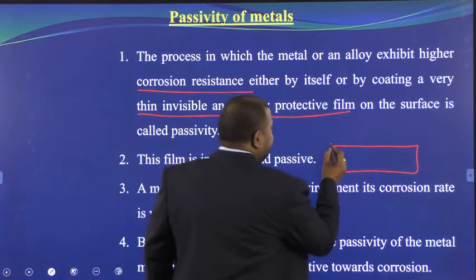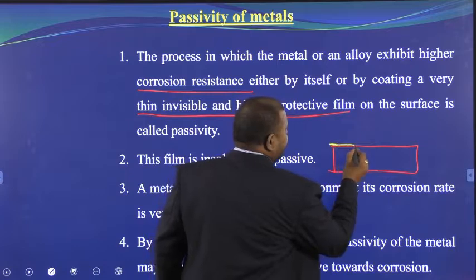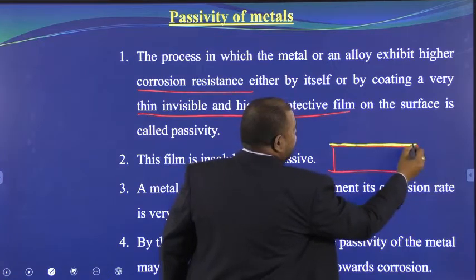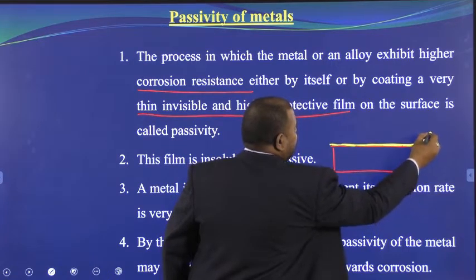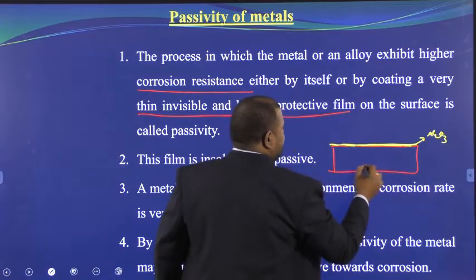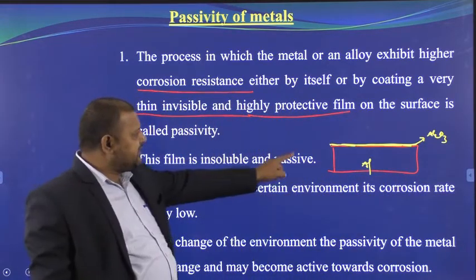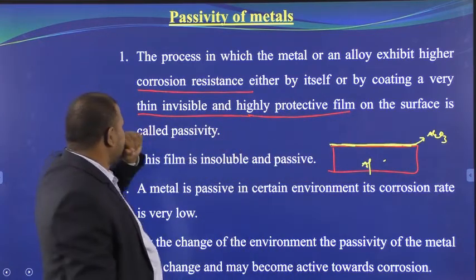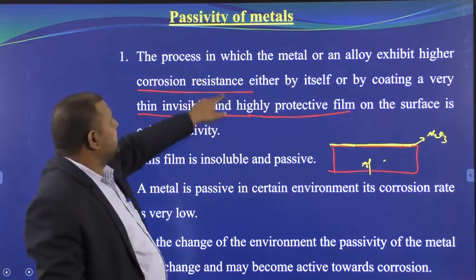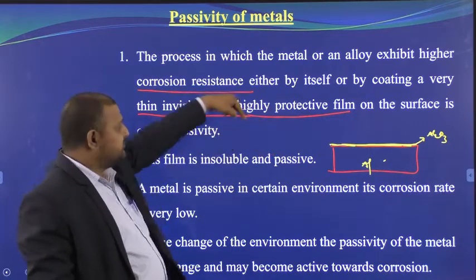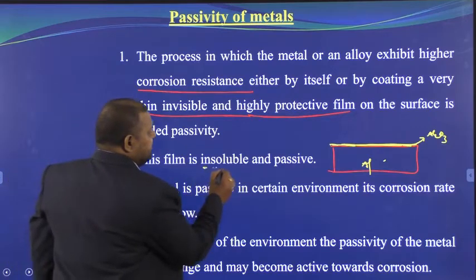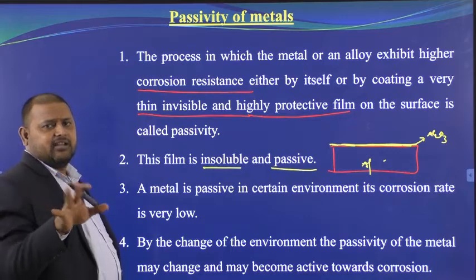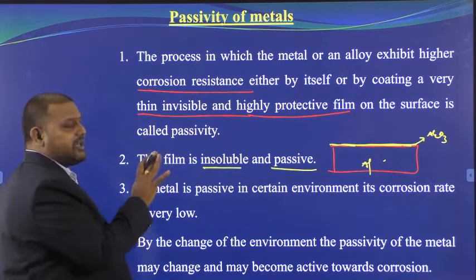If you take the surface of an aluminum wire, a very thin film of aluminum oxide is formed. This aluminum oxide film stops the further corrosion of aluminum. This film is insoluble and passive — passive means it does not react with air or the environment.